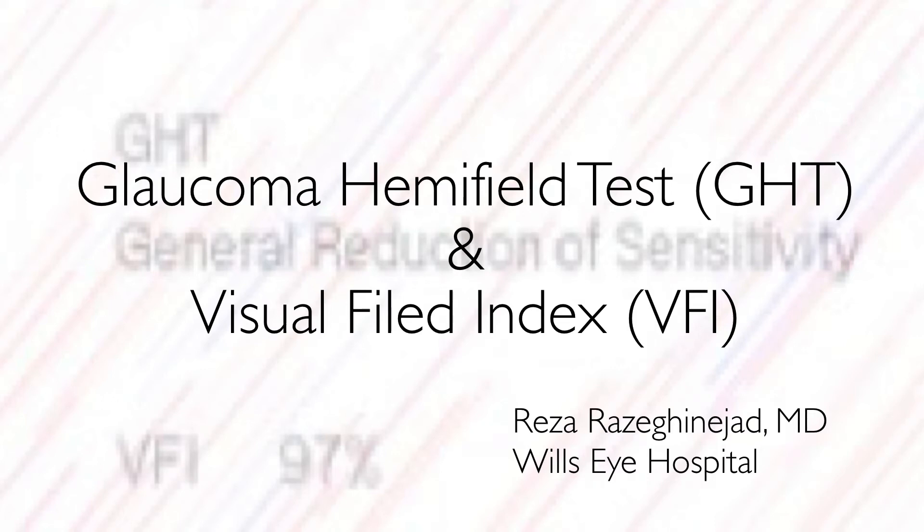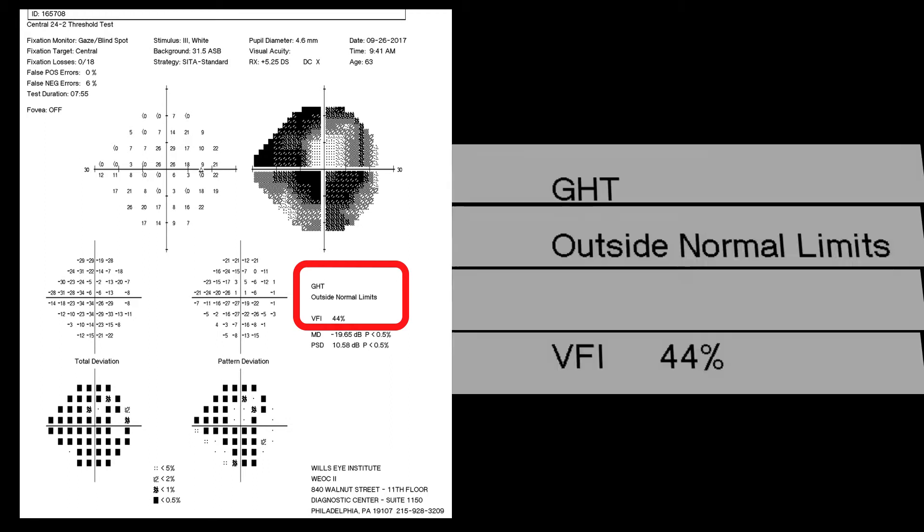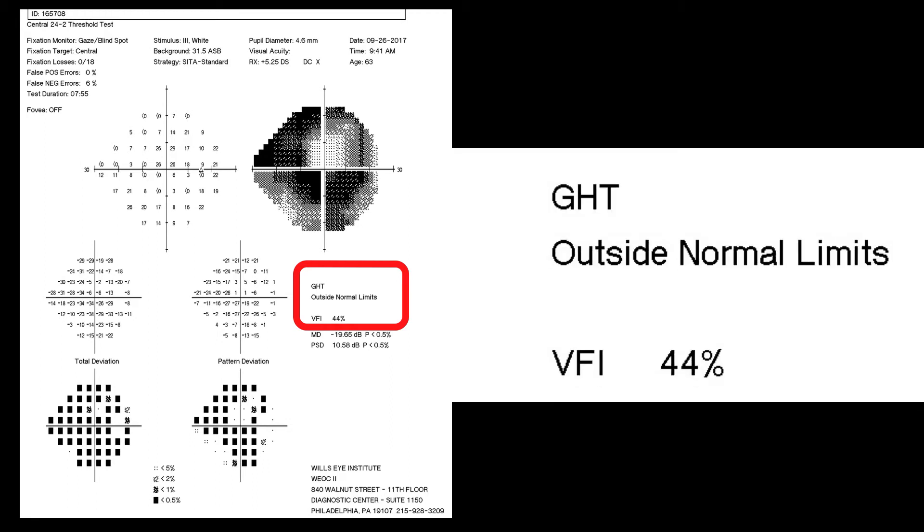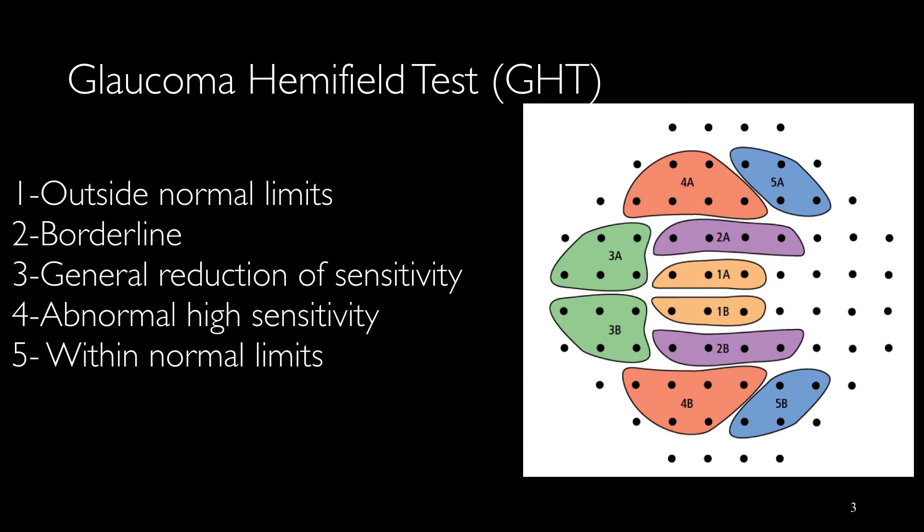Glaucoma hemifield test and visual field index are two indices that you can find under the gray scale. GHT is reported as outside normal limits and VFI is 44%.